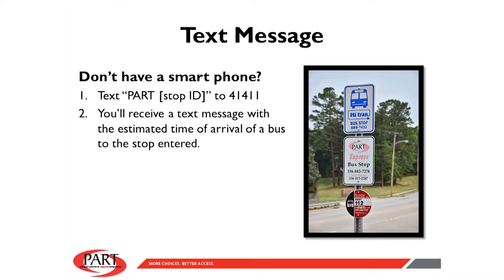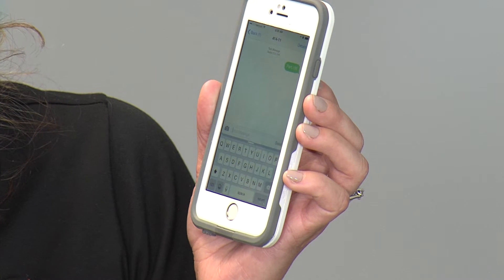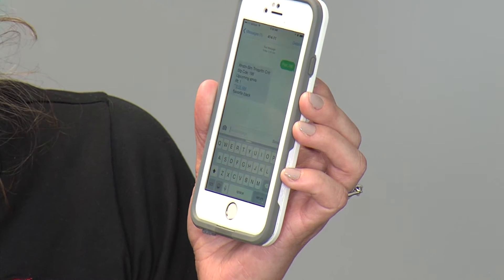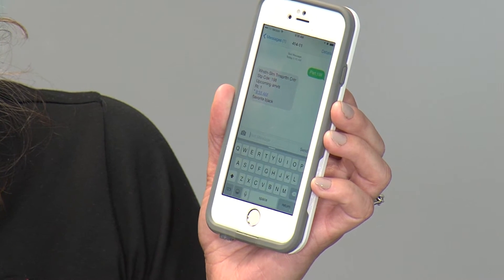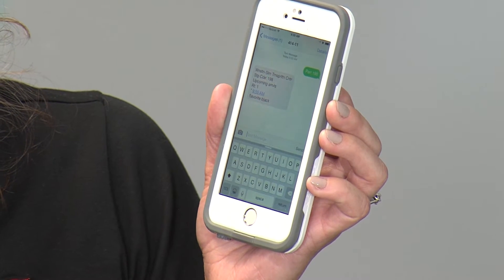If you don't have a smartphone and want to get your arrival time, at a bus stop you can text PART with the stop ID number to 41411. You'll see the stop ID number at the bus stop on a sign that's a circle sign with the PART logo on it. You'll receive a text message back with the estimated time of arrival for the bus coming to your stop.